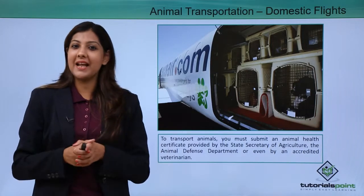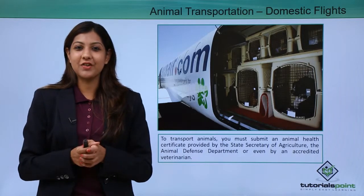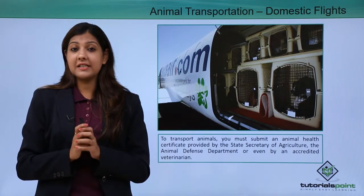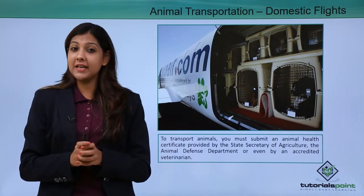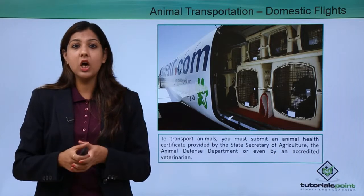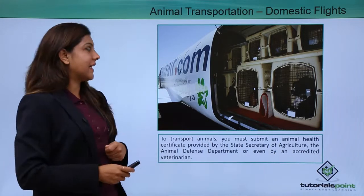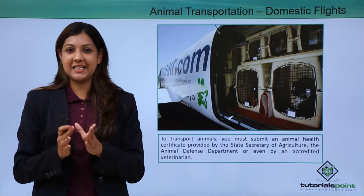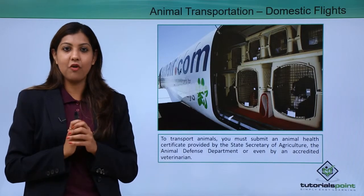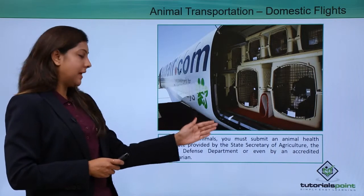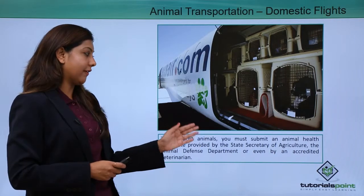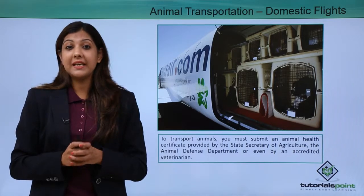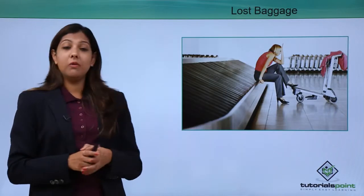If you want to carry a pet — a cat, dog, parrot, or rabbit — it is not allowed inside the cabin where passengers are seated, unless it is a guide dog for a blind passenger. Generally, animals are transported in the forward cargo of the aircraft, which has air conditioning. To transport animals, you must submit an animal health certificate provided by the state secretary of agriculture, the animal defense department, or an accredited veterinarian.